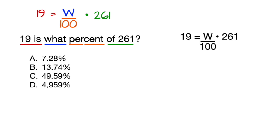So now we just have to solve for W by dividing by 261 on each side and then multiplying by 100 to get W equals 7.28%.